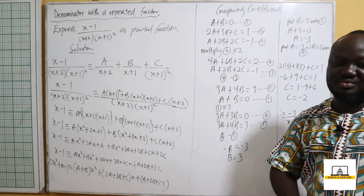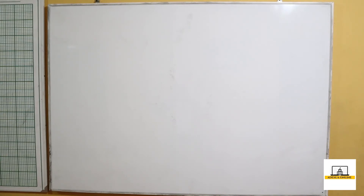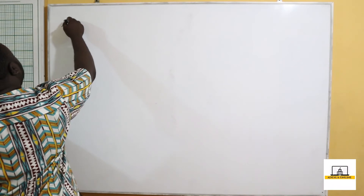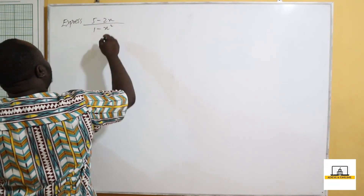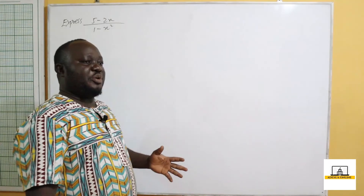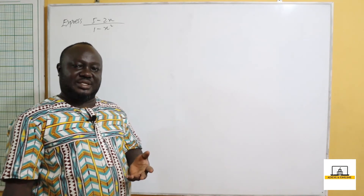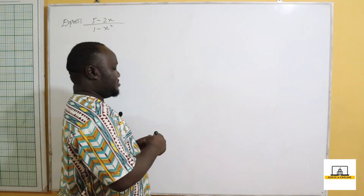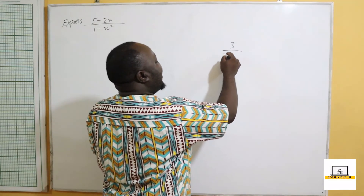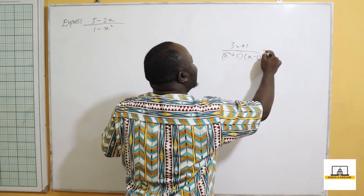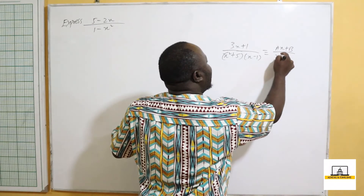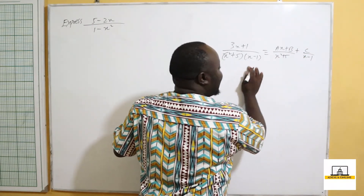Now let's solve a varsity question: express (5−2x) over (1−x²) in partial fractions. Recall that for a quadratic expression like (3x+1) over (x²+5)(x−1), you would write (ax+b) over (x²+5) plus C over (x−1), because x²+5 cannot be factorized. That's a pure irreducible quadratic.